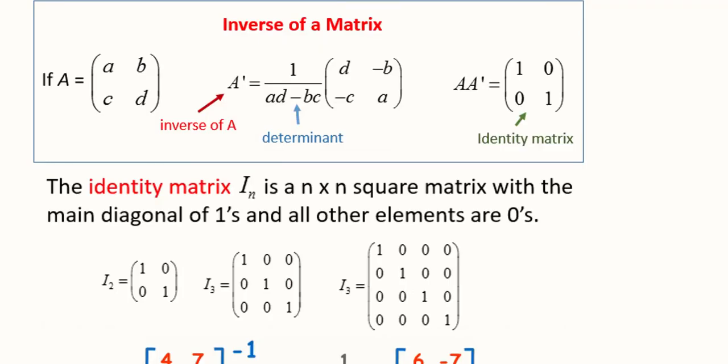Now an interesting finding is there and that is we do multiplication between an original matrix and its inverse. It is going to give us a certain matrix which is known as identity matrix. Let us see how this can happen.